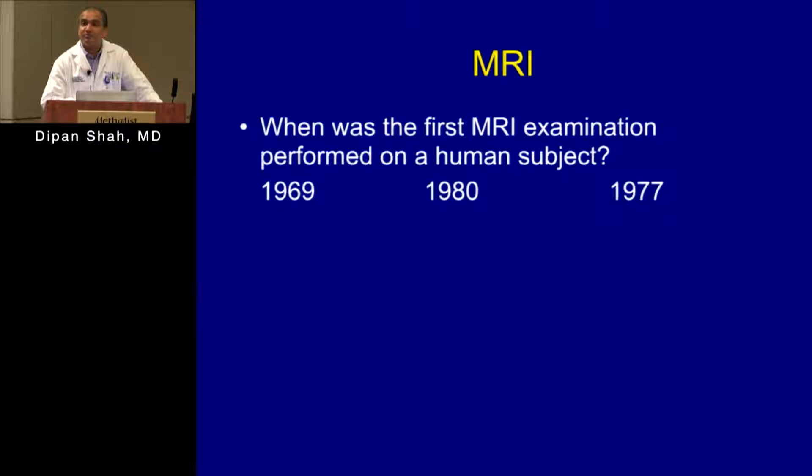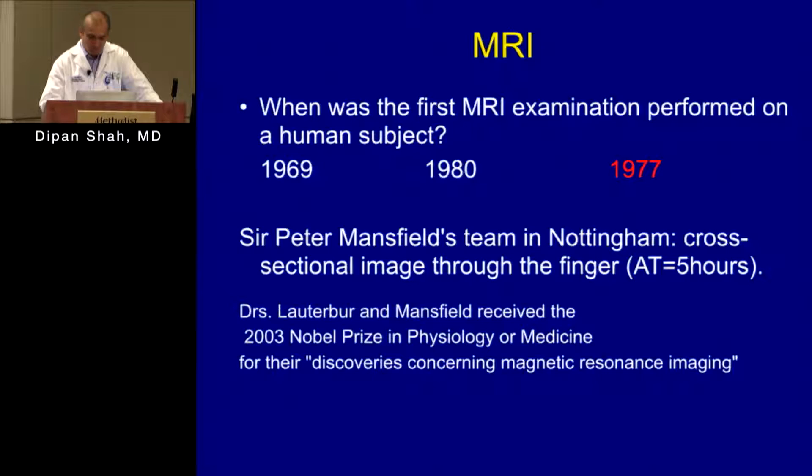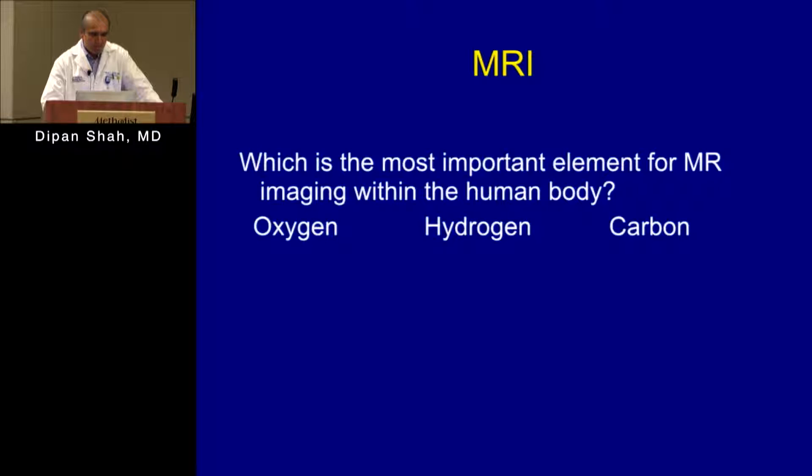How many say 1969? One person. How many say 1980? Two or three. How many say 1977? Okay, so we've got a lot of people abstaining. In fact, it was 1977 when they did their first human experiment, so most of you are right if we don't count the abstainers.